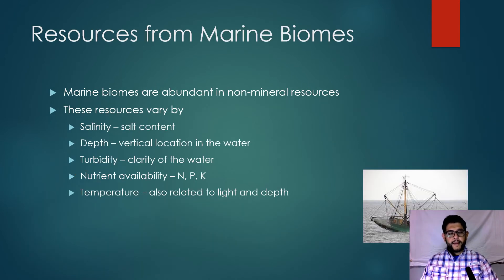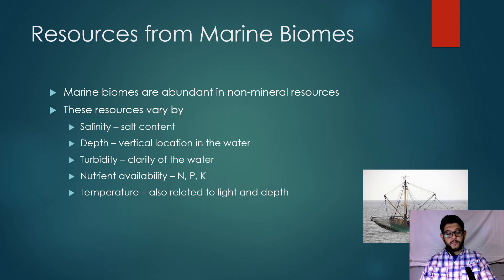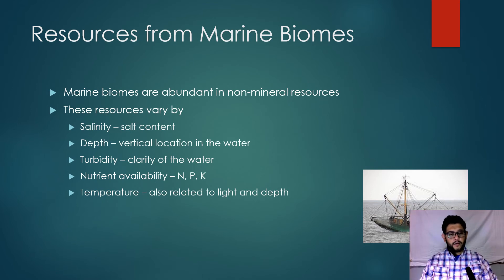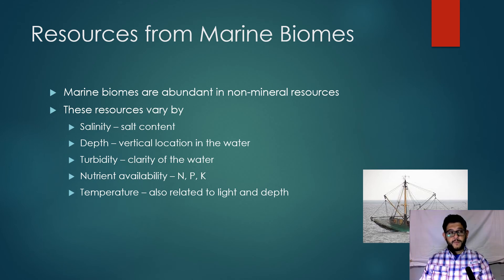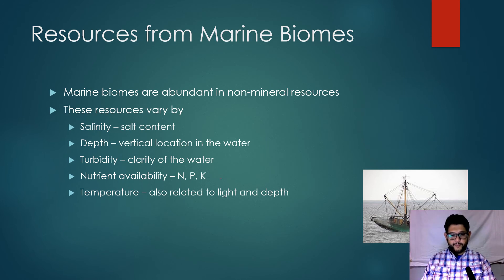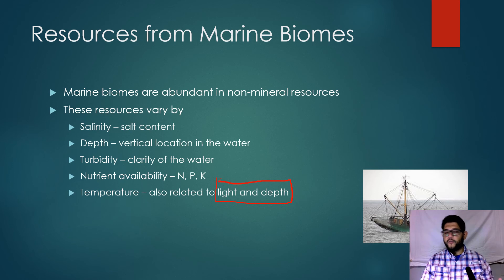Another important aspect of marine biomes is that they provide us with a lot of resources — abundant in non-mineral sources like fish, but also depending on salinity, depth, and turbidity. Turbidity is the clarity of water: if the water is super clear, it may not have as many nutrients, which means less life and especially less algae. Nutrient availability — nitrogen, phosphorus, potassium — and temperature, which is closely related to light and depth, all play a big role in these ecosystems.